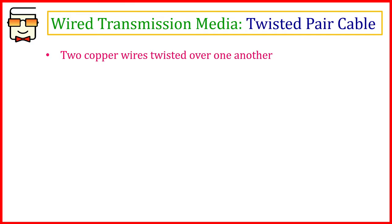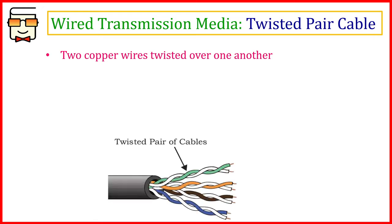Starting with the twisted pair cable — it basically consists of two copper wires twisted over one another. As you can see in this diagram, every twisted pair cable has two copper wires that are not running parallel to each other; rather, they are twisted over one another, which is why it is called a twisted pair cable.